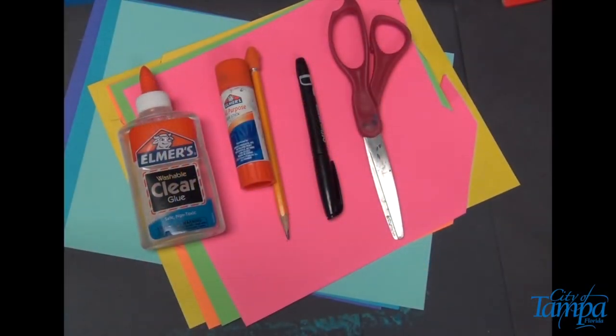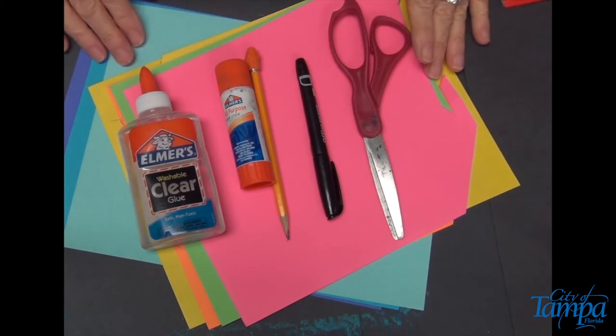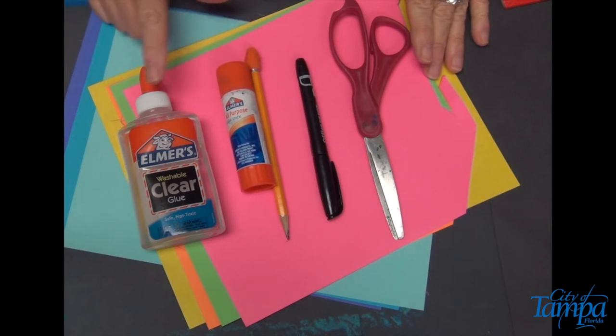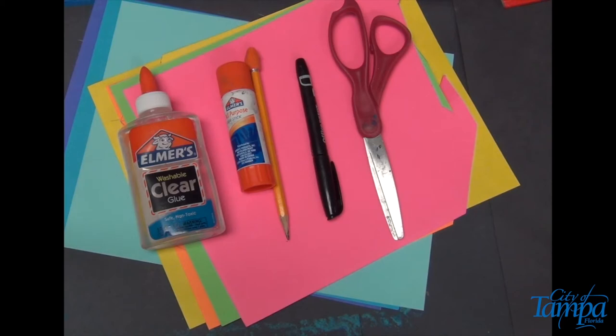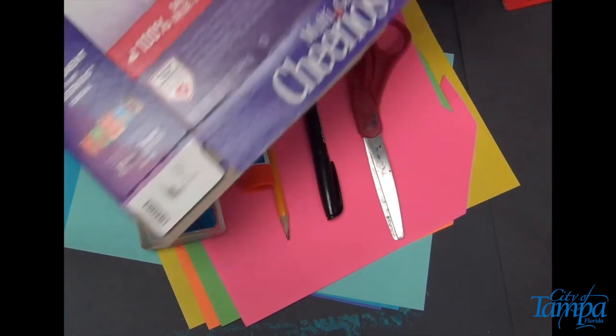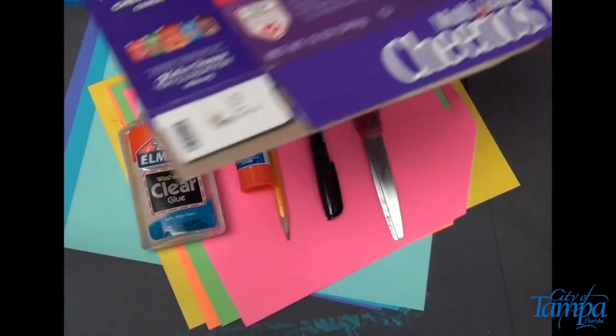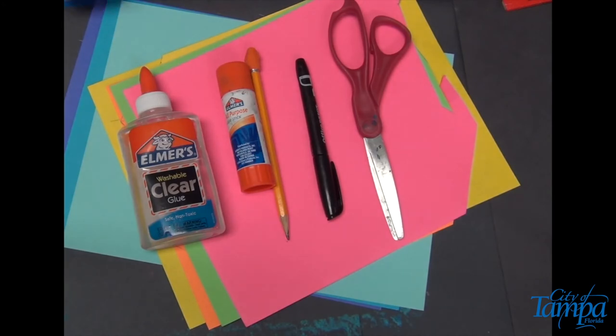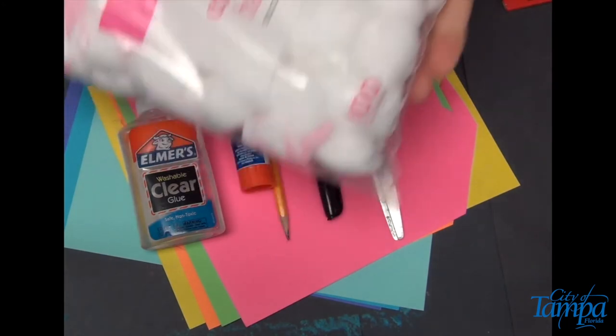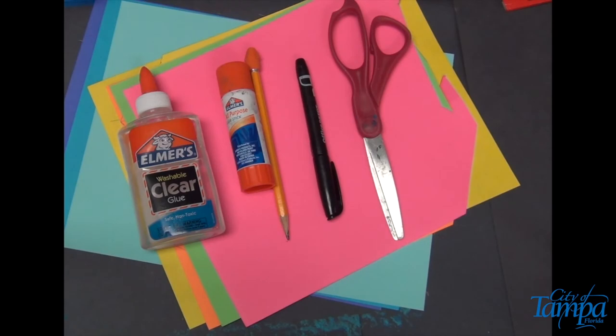Before we begin, let's go over the materials that will be needed. We'll need some construction paper in bright colors, glue stick, Elmer's glue, a cereal box or some cardboard to give stability to our project, cotton balls, scissors, ruler, pencil, black sharpie, crayons, colored pencils, magazine, fabric, anything you can think of to come up with your kite material.